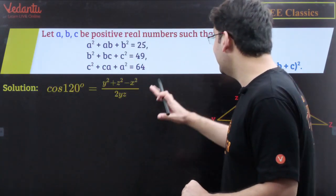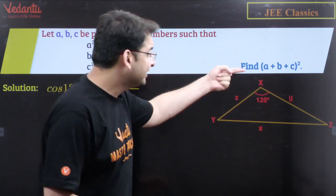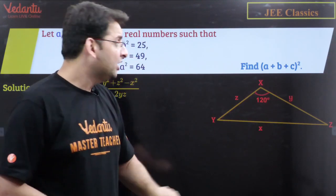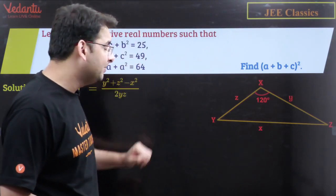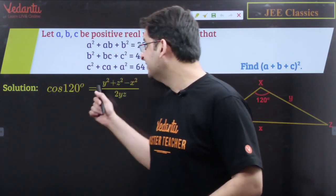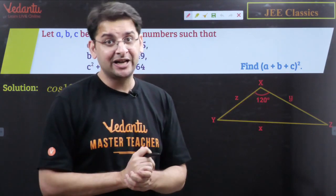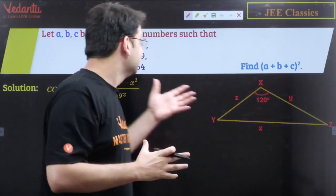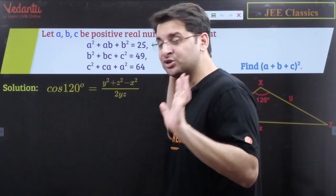Consider a triangle X, Y, Z where angle B is 120 degrees. X's opposite side is small x, Y's opposite side is small y, Z's opposite side is small z. If we apply the cosine rule: cos(120°) = (Y²+Z²−X²)/(2YZ). This is the cosine rule. The idea was to generate A²+B²+AB, and one way this can be generated is through the cosine rule.